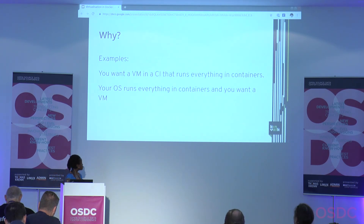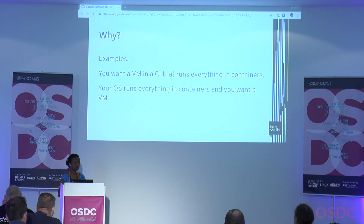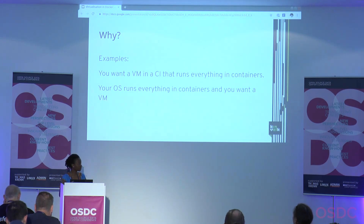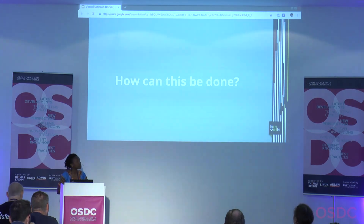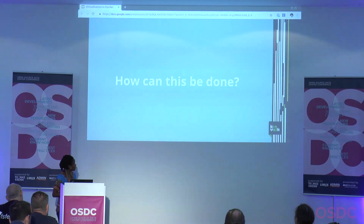That's one example case scenario. Another example might be that your operating system runs everything in containers and you need a virtual machine — for example, Flatcar Linux, which is a friendly fork of CoreOS.